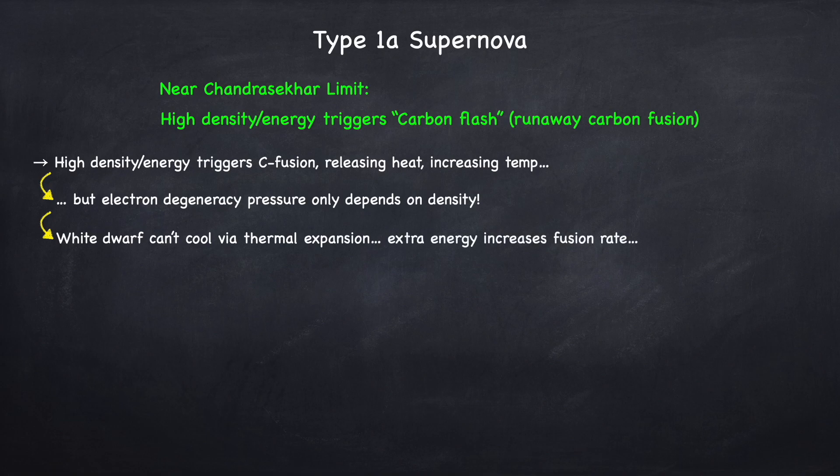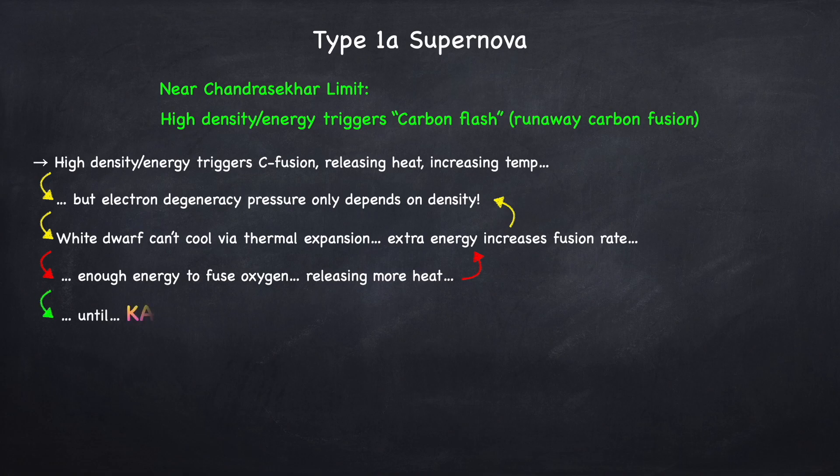Now that there is even more energy trapped in this white dwarf, that just increases the fusion rate, releasing even more energy. But still we have degenerate matter, and this has no effect on the pressure, and so still the white dwarf cannot release this energy. Eventually you may get enough energy to fuse oxygen, releasing even more heat. Now you have carbon fusion and oxygen fusion taking place, and again this extra energy only serves to further increase the fusion rate, and eventually you get an enormous explosion. Now this whole process I just described happens very quickly, hence the term carbon flash. As I said, we don't fully understand the details of how this explosion is set off, but it's something like what I just described.